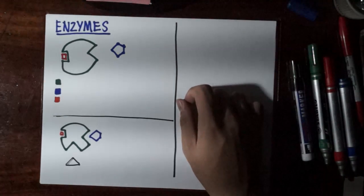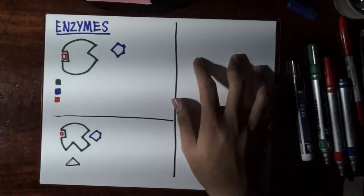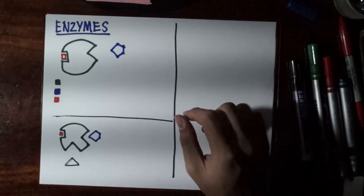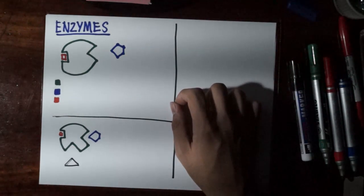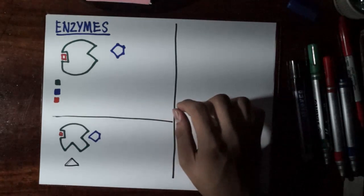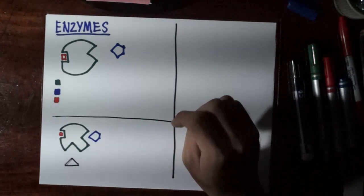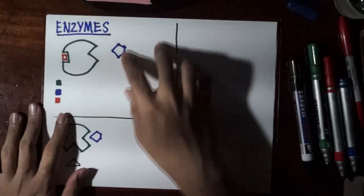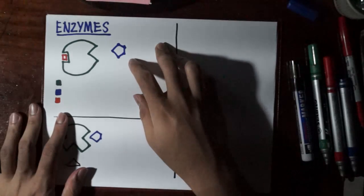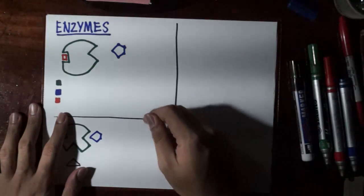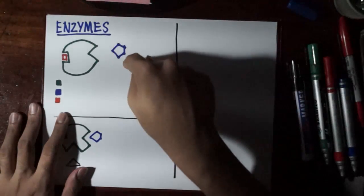Since enzymes are catalysts, you should know that catalysts are reagents or chemicals that speed up the reaction by lowering the activation energy. That's kind of a review of general chemistry. For this discussion, we will focus solely on enzymes as applied to biochemistry. When we have enzymes, of course, we should assume that there's a chemical process or a certain reactant that it speeds up in turning from reactant to product.